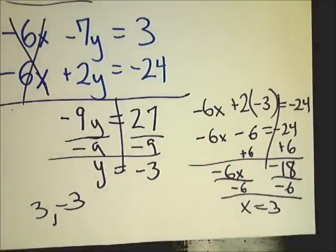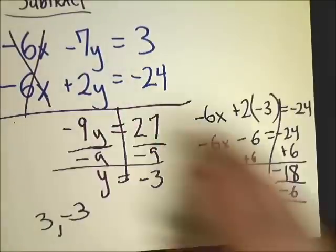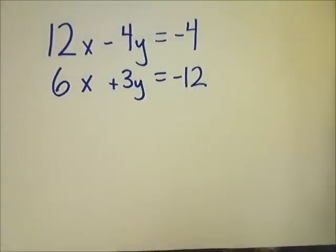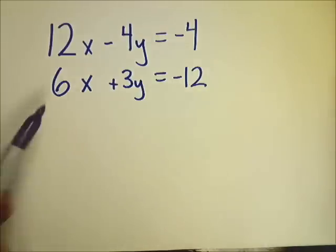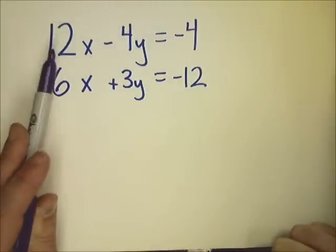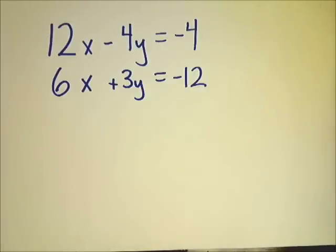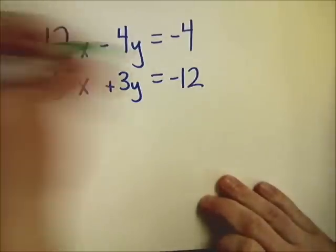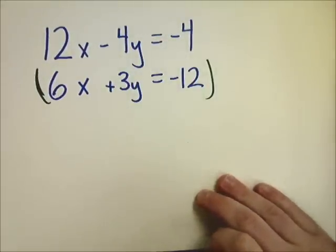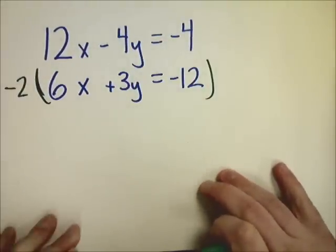Now, what happens if it doesn't look like that? As you can see in this problem, none of them are the same. None of the y values are the same or the x values are the same. But if you can look at them and see that one of them is a multiple of another, it's really easy. So in this case, 6 is half of 12 or 2 times 6. So what I'm going to do is take the entire equation on the bottom and multiply it by 2. And because I tend to like to add, I'm going to multiply it by negative 2.